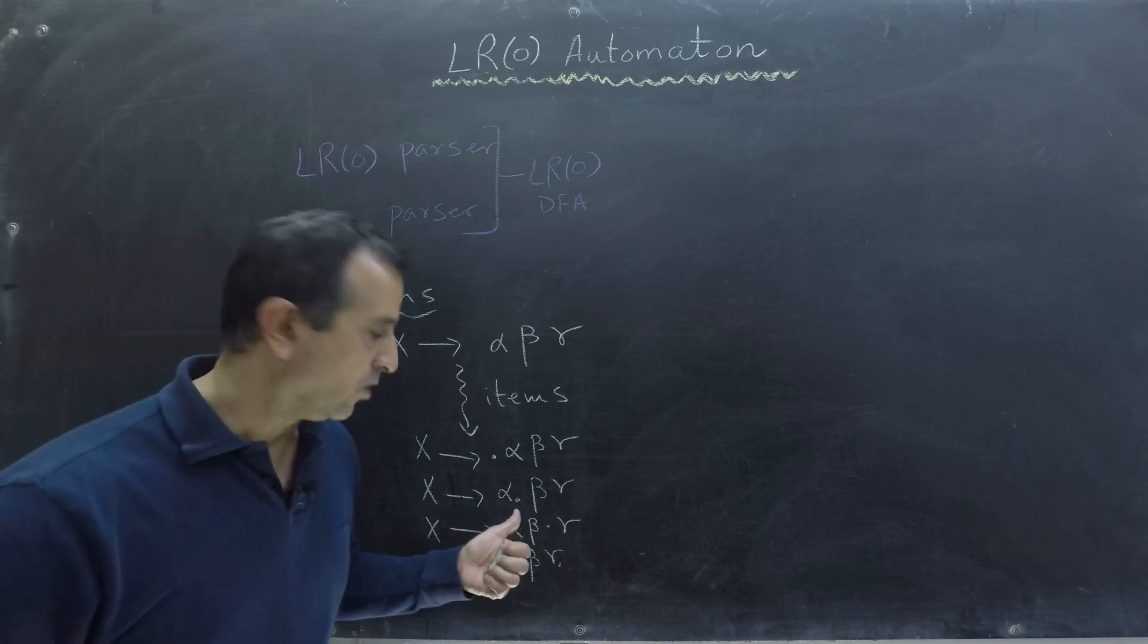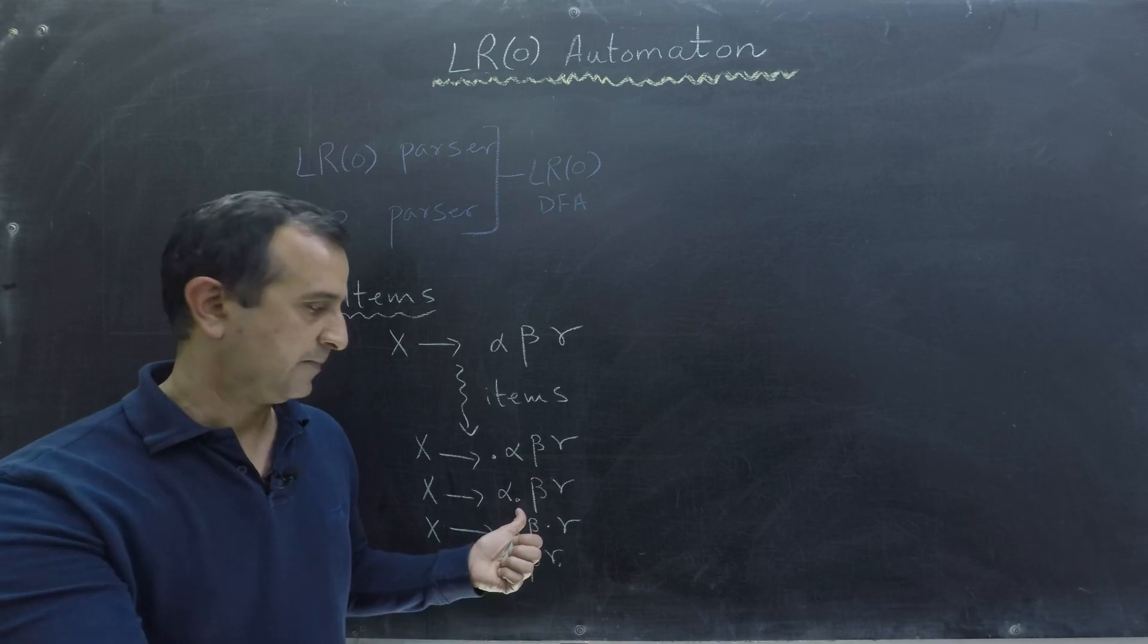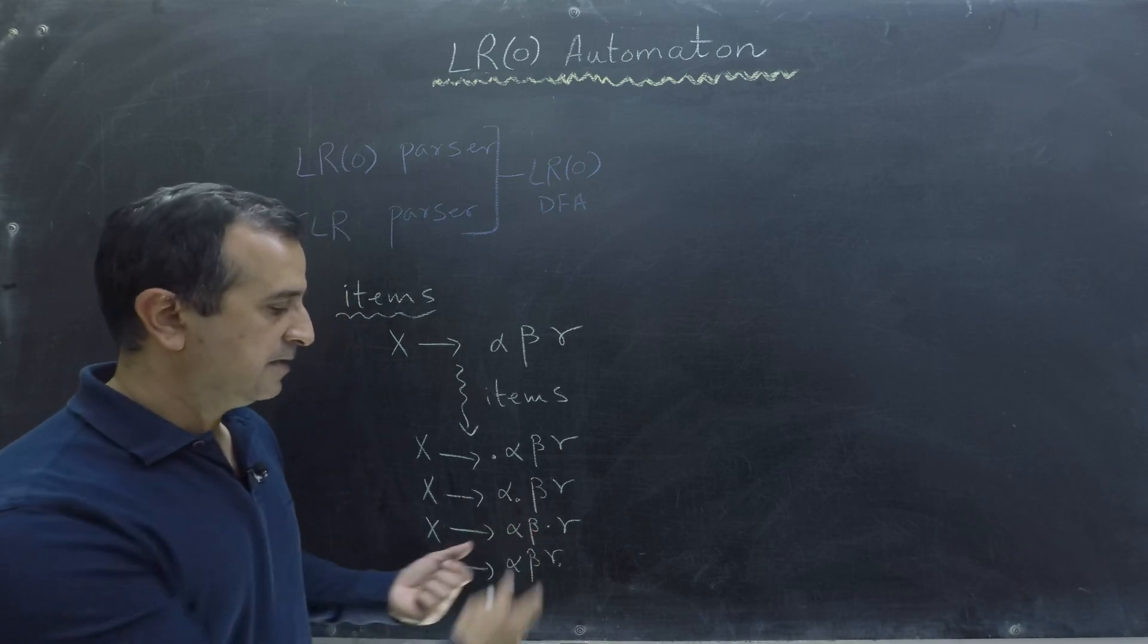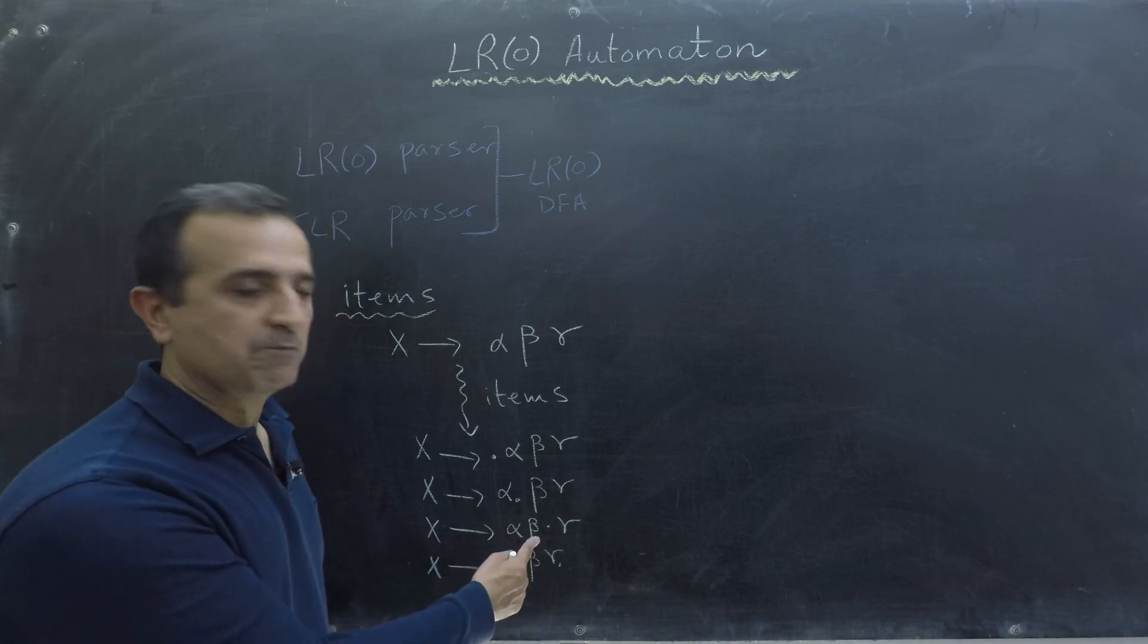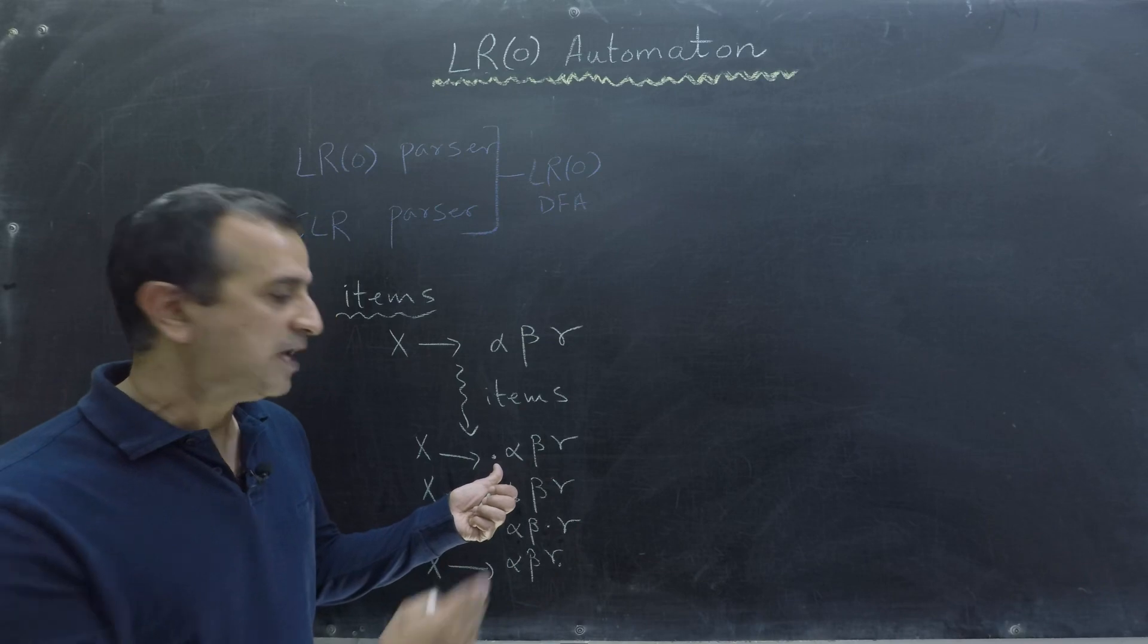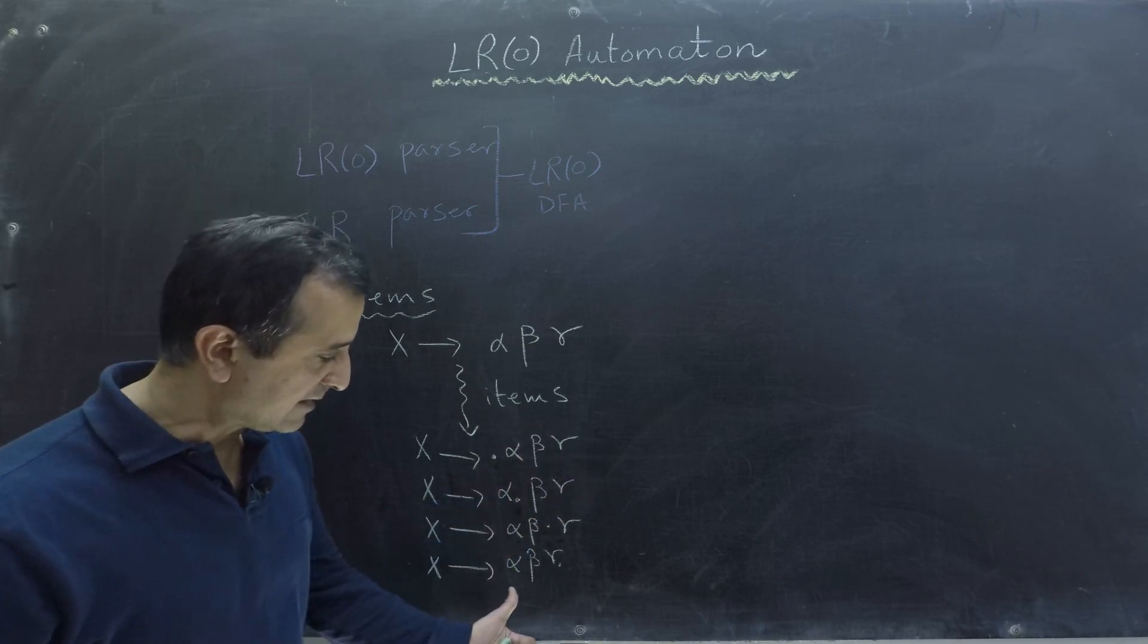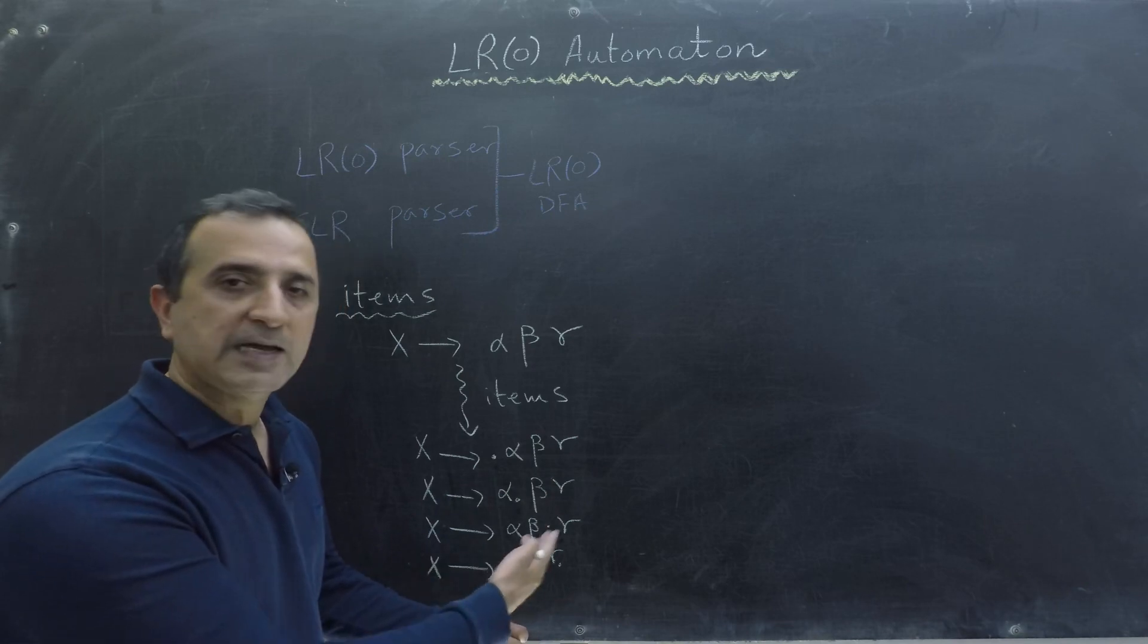Now this dot represents the progress of our parser. For instance, in this case the dot specifies that we have already seen alpha and beta, but we have not seen gamma yet. In this case, the dot specifies that we have not seen any of those symbols yet. Whereas in this case, the dot specifies that we have seen alpha, beta, gamma, all of them.